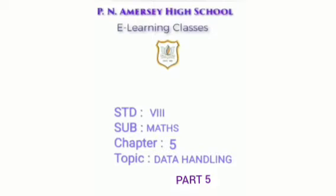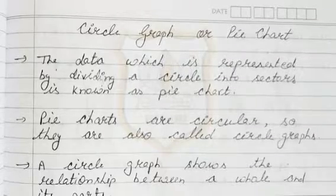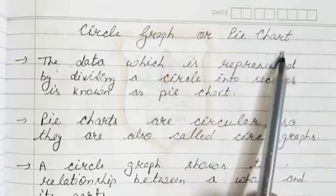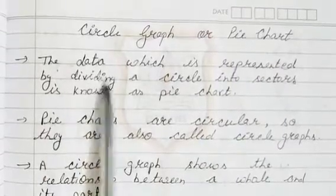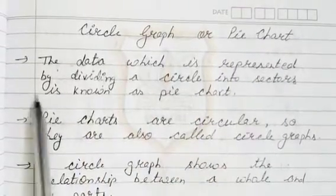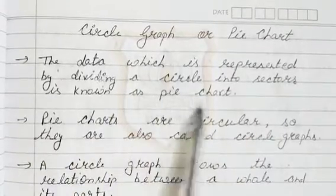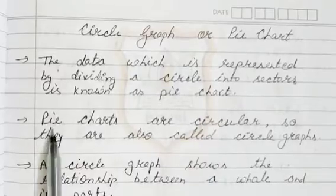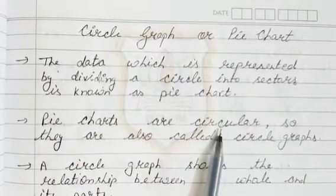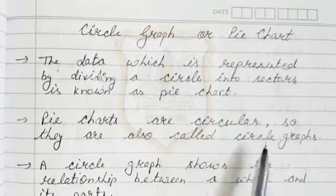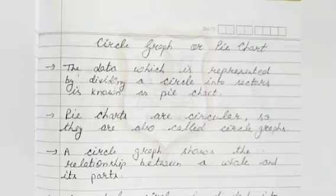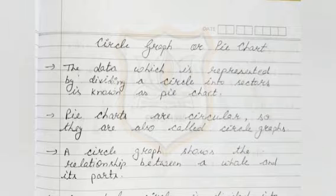Hello students, let's continue chapter 5, that is data handling. Today we will study about circle graph or pie chart. The data which is represented by dividing a circle into sectors is known as pie chart. Pie charts are circular, so they are also called circle graphs. Data can also be presented using a circle graph or pie chart.